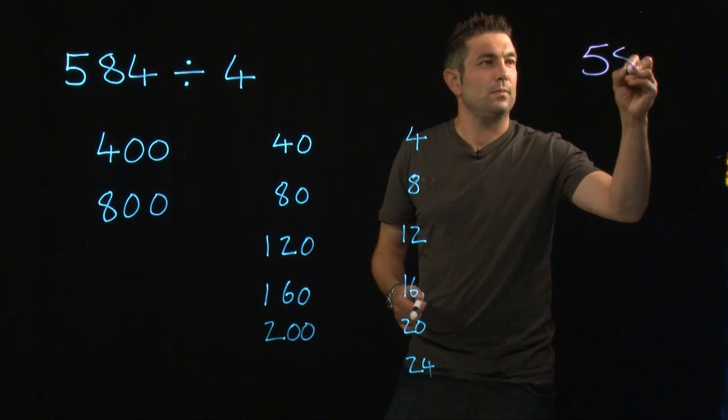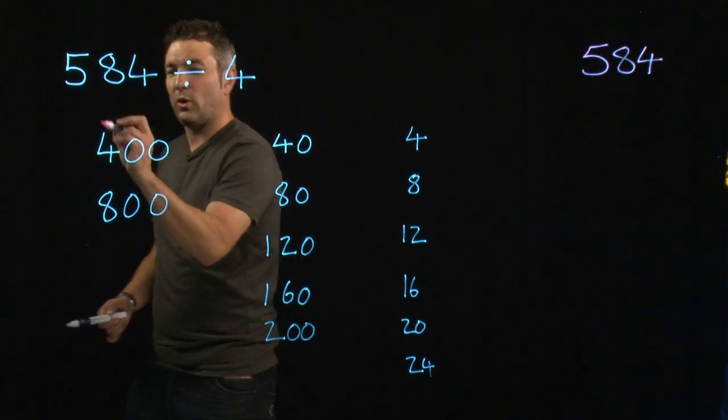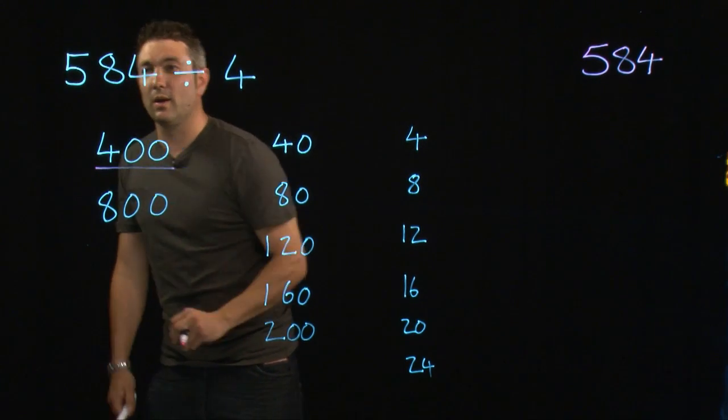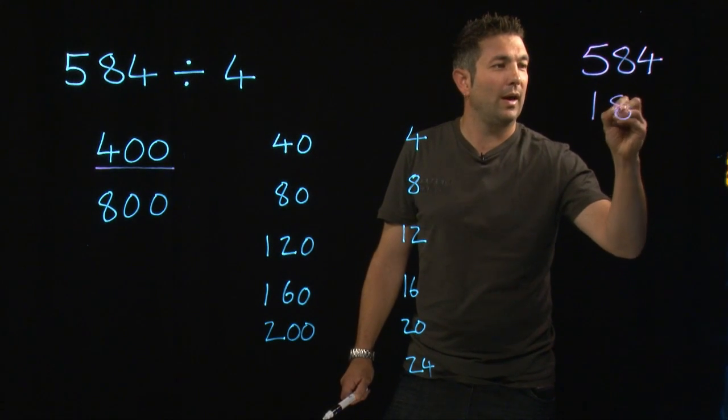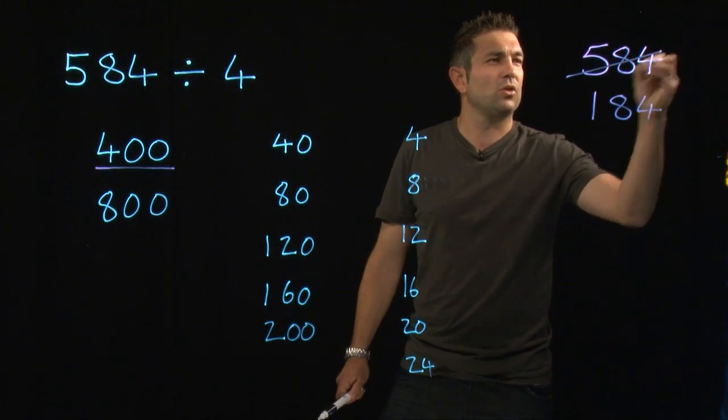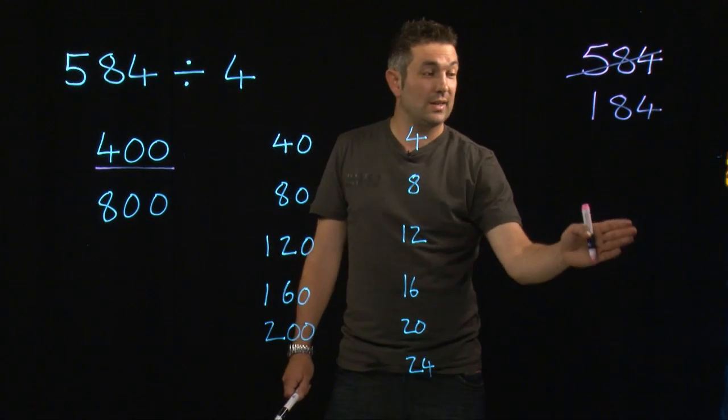Okay. So, if I look at 400, go up to 400, 800 is too big. I'm going to underline that. And I'm going to take the 400 away from this, which leaves me with 184. I'm going to cross that out because I don't need to think about that anymore. The ultimate aim is to get down to zero.